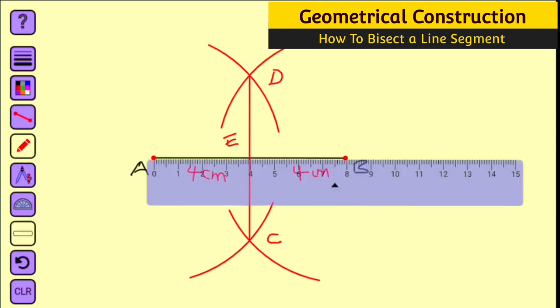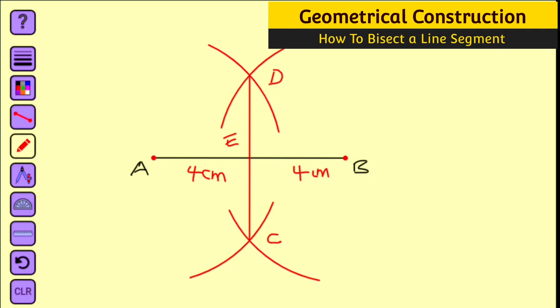You can see that my ruler measures from this point to this point as eight centimeters, and halfway you can see on the ruler four centimeters. This is exactly how to bisect a line segment into two equal parts.